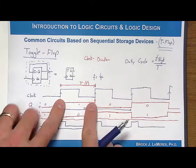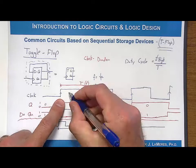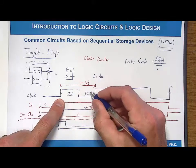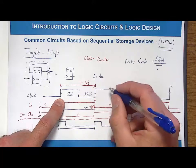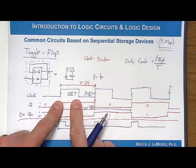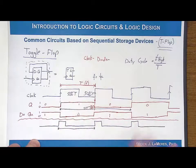So the duty cycle is the high time over the period. When you have a perfect square wave, you're high for 50% of the time and then you're low for 50% of the time. So a perfect square wave has a 50% duty cycle.